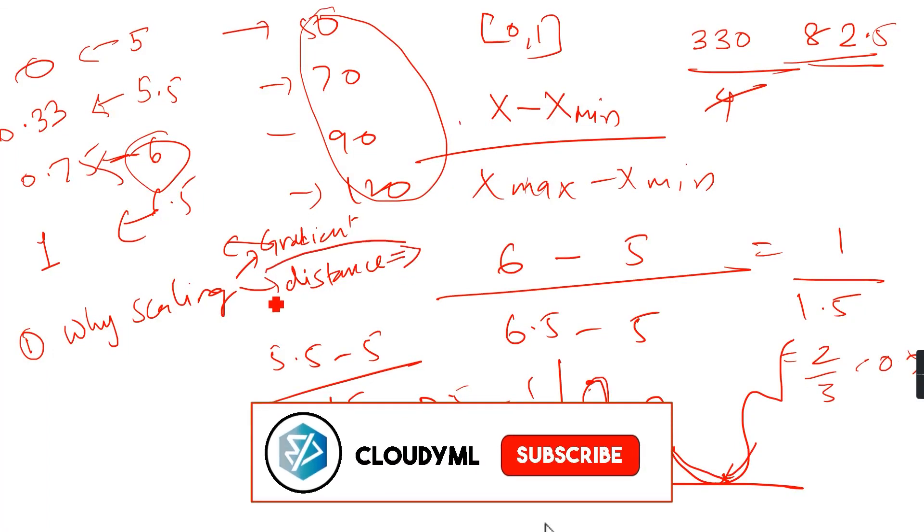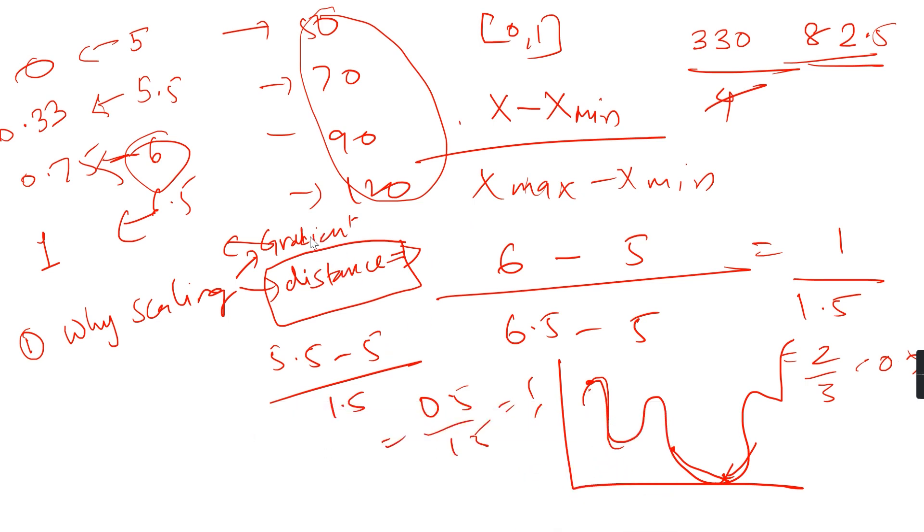Similarly, distance-based algorithms: distance is always a parameter to take into consideration when making a model with a distance-based approach like KNN, logistic regression, or linear regression where distance is an important parameter. Feature scaling should be done because otherwise my model will distinguish based on the higher values.